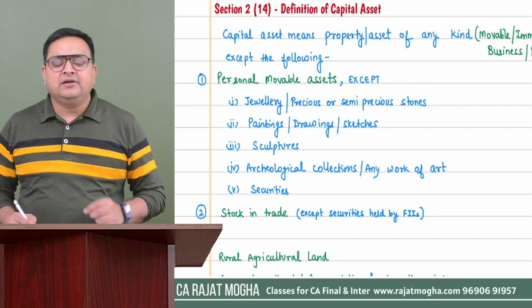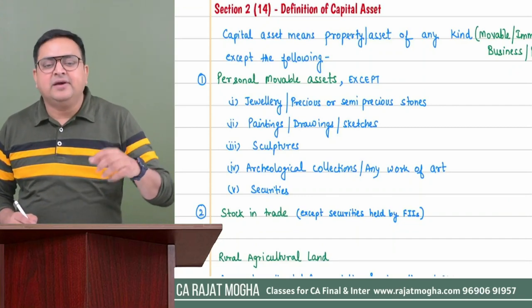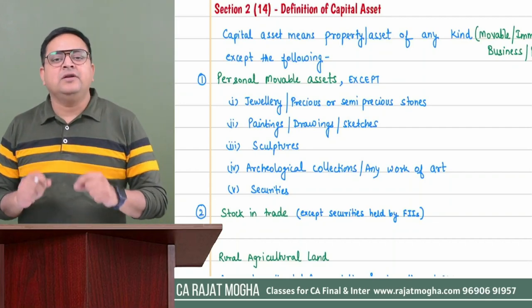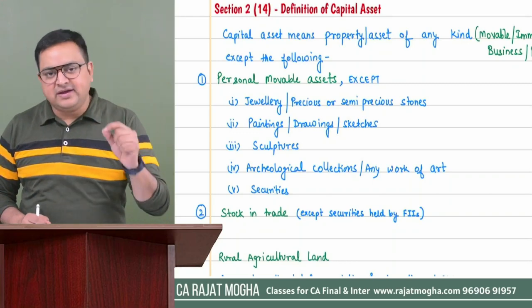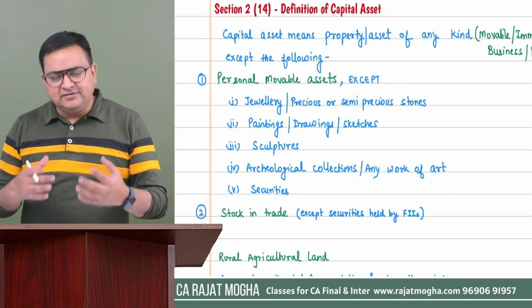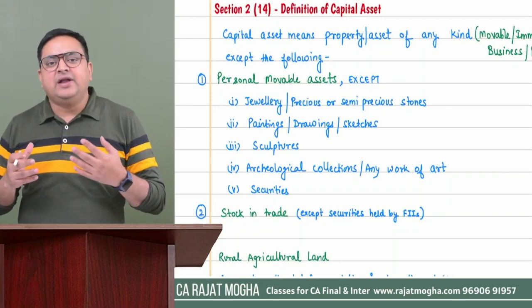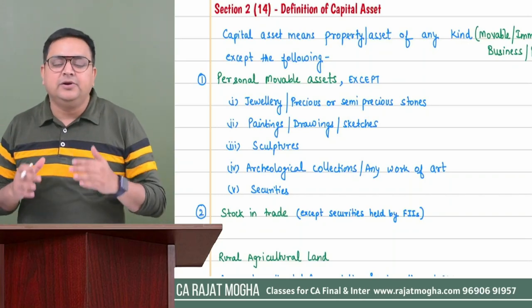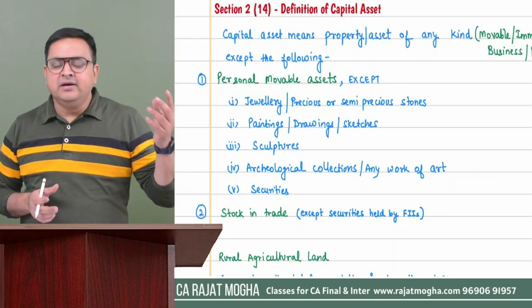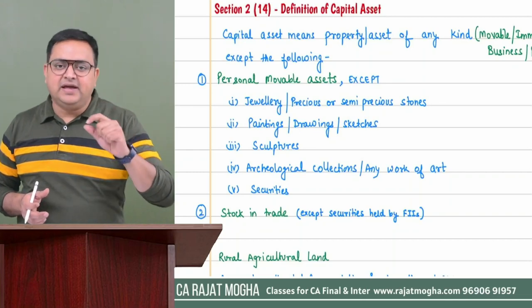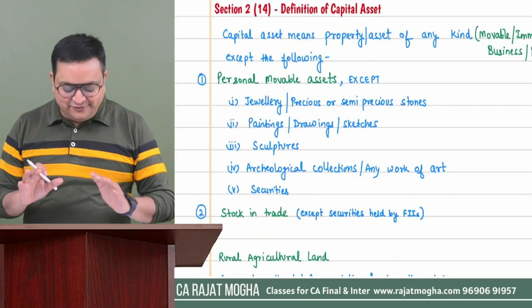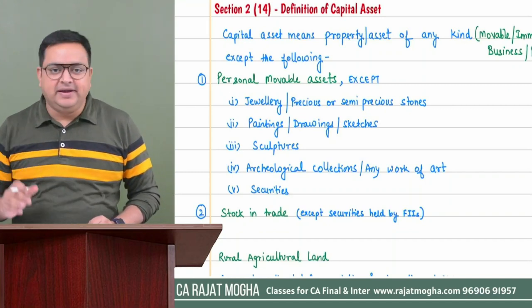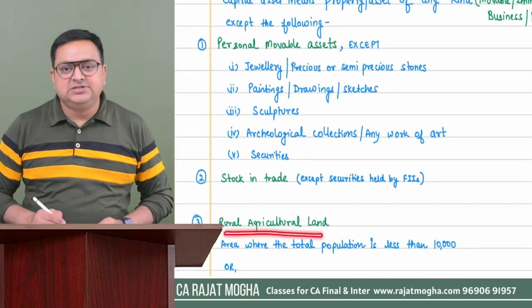Income tax has mentioned a special case for Foreign Institutional Investors (FII). Although FII are in the business of selling securities — which would normally be stock in trade — income tax has specifically excluded FII from this rule. For FII, if they sell their securities, it will be considered a capital asset and capital gain will arise, not PGBP. This is because capital gain has concessional tax rates compared to PGBP.